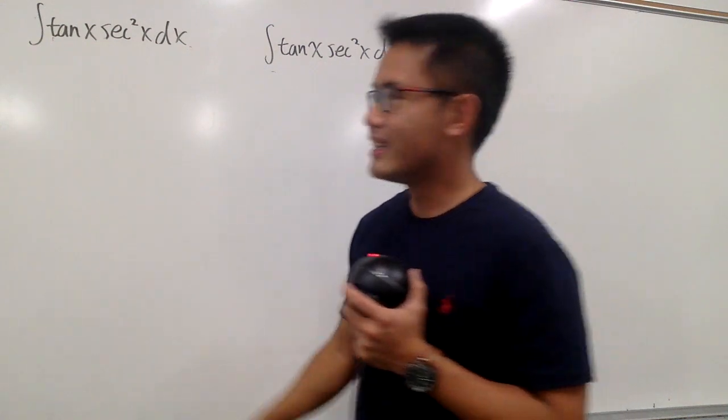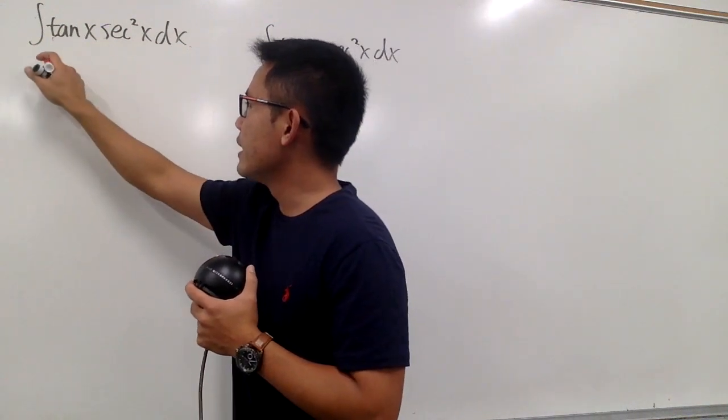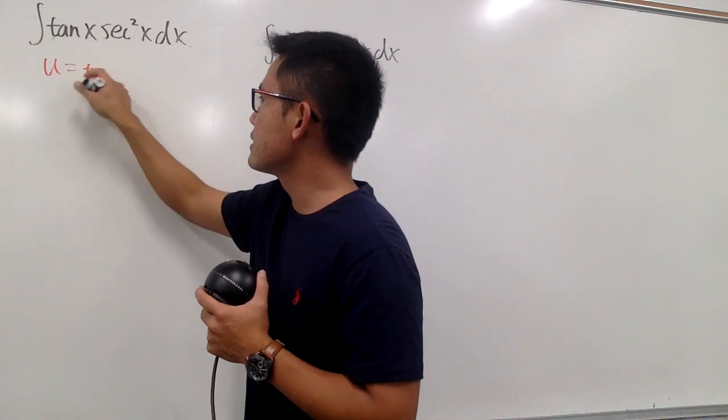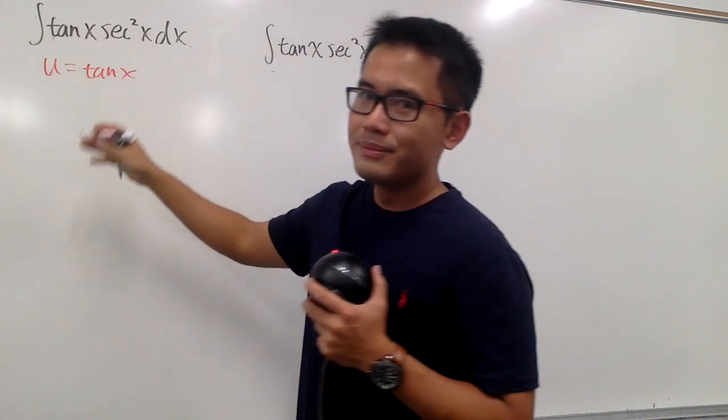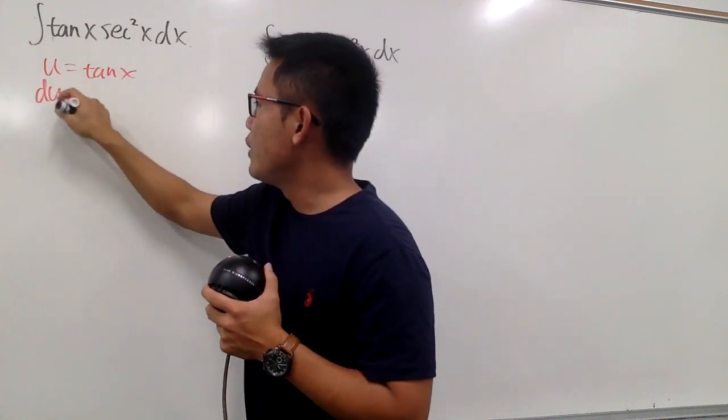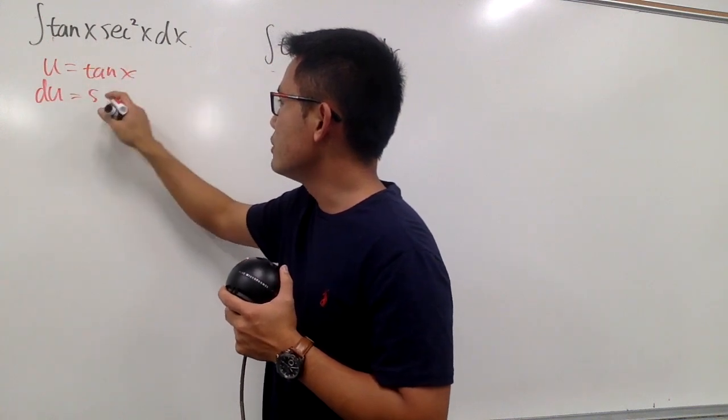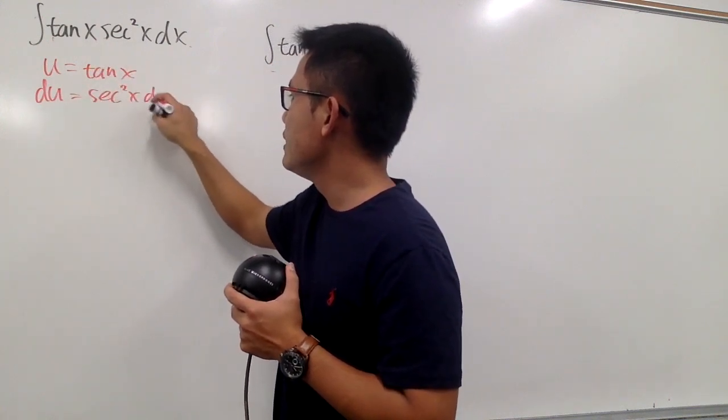Let's do the obvious one first. For this one right here, let me just say that u equals tangent x. How come? Because I know right away, when I differentiate this, I get the derivative of tangent x, which is secant squared x dx.